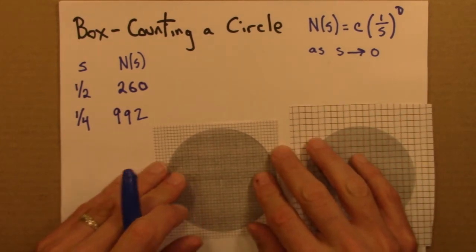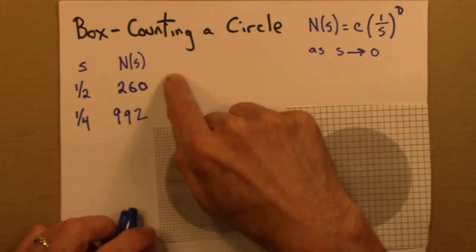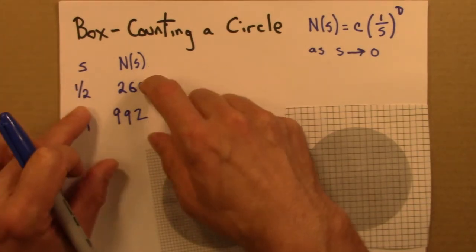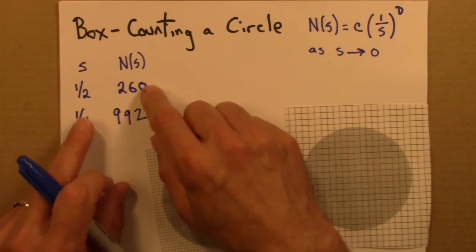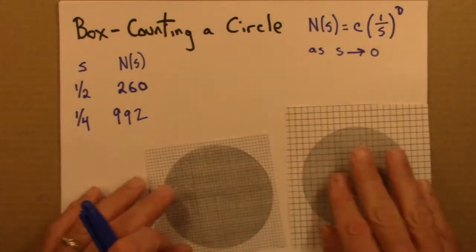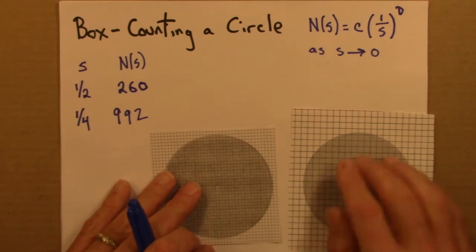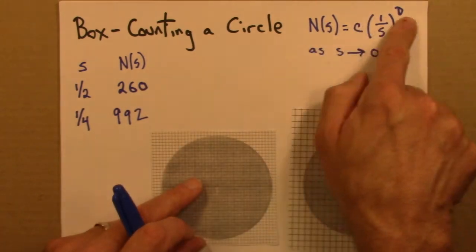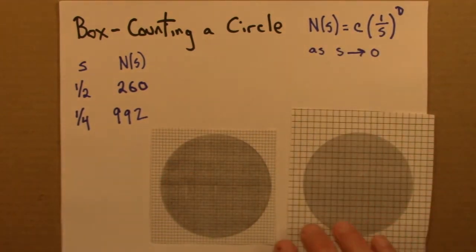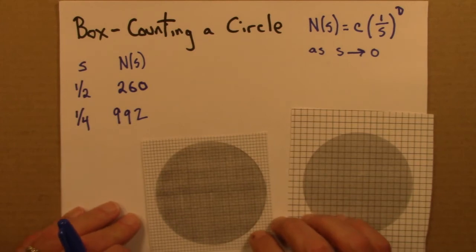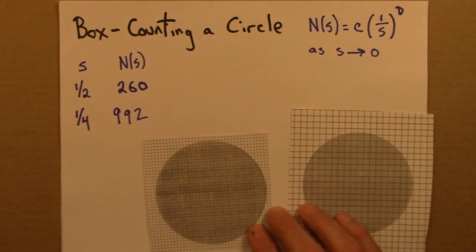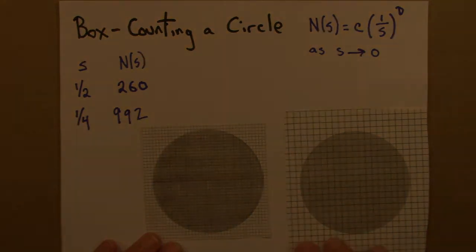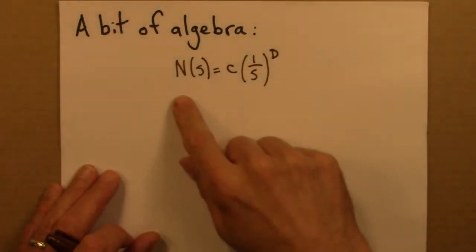So now the challenge is: how can we estimate D from these two data points? In the past I've been more or less saying we can see right away what D has to be, or using the fact that we know what D should be. But what if, as is often the case, we don't know what D should be and it's not immediately obvious what pattern we can exploit? So we're going to need to do a little bit of algebra. In the next video we'll learn a geometric way to do this, but let's start with the algebra.